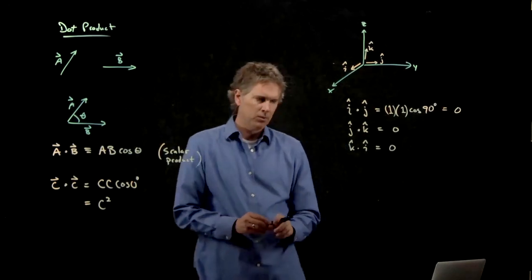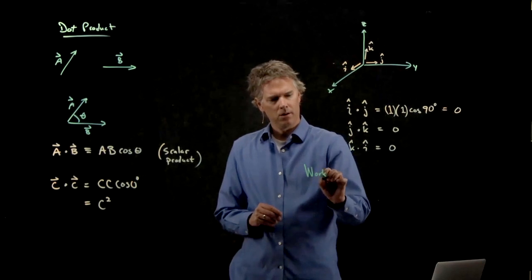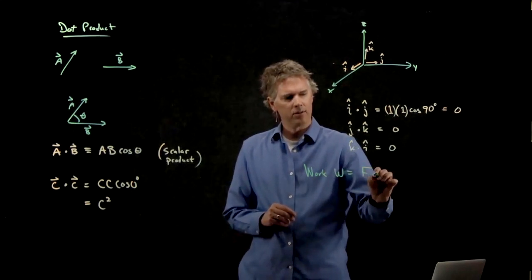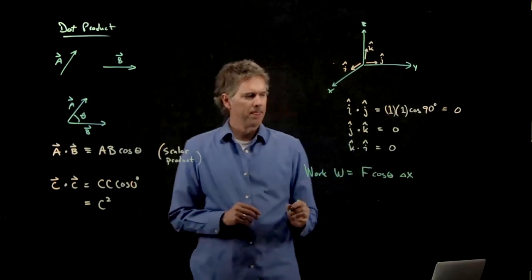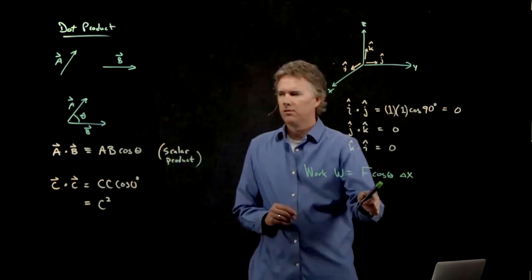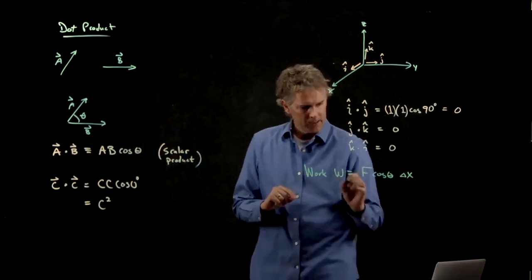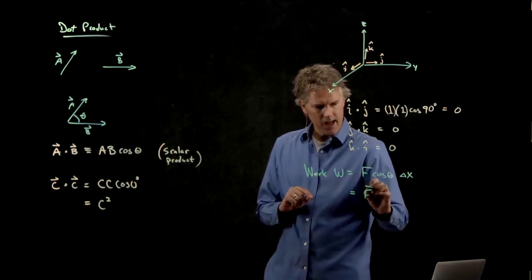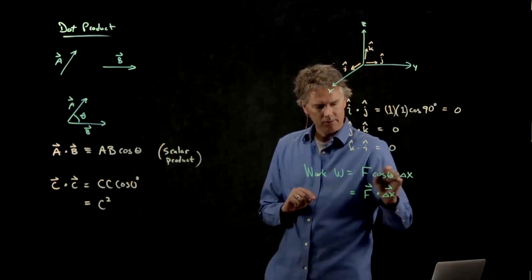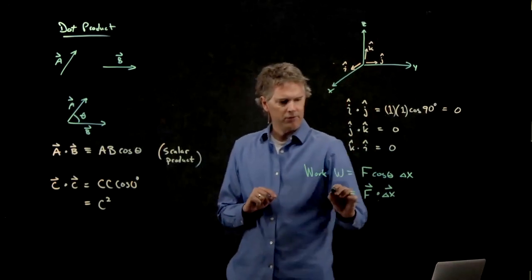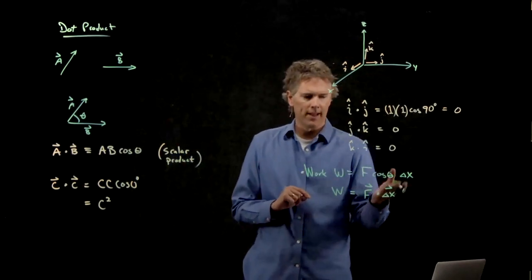So let's go back to our definition for work. Our work, we said, was f cosine theta delta x. But that looks a lot like this dot product right here. So can we just write it like this? F dot delta x, where I put vector signs on top of those things. And the answer is, of course, yes. We can do that.